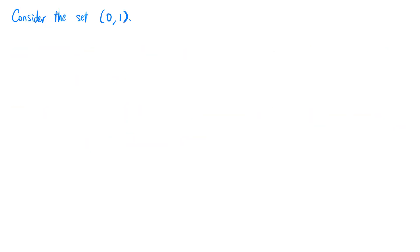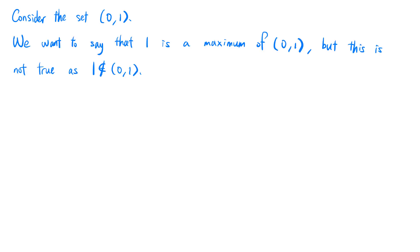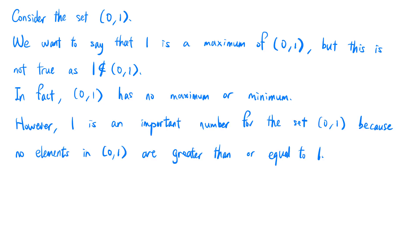Now we consider the open interval (0,1). We want to say that 1 is a maximum of (0,1), but this is not true as 1 is not an element in (0,1). In fact, (0,1) has no maximum or minimum. However, 1 is an important number for the set (0,1), because no elements in (0,1) are greater than or equal to 1. This motivates the following definition.